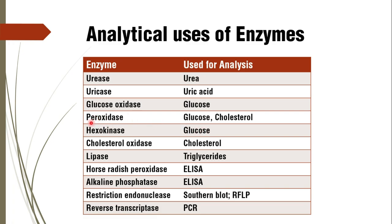We also use the hexokinase method for glucose estimation. Both the GPDH method and hexokinase method use enzymes for glucose estimation. For triglyceride estimation we use lipase. In the ELISA technique, in the second part of the reaction where color is developed to measure intensity, we use horseradish peroxidase and alkaline phosphatase.